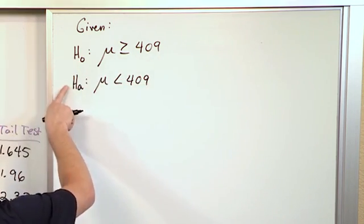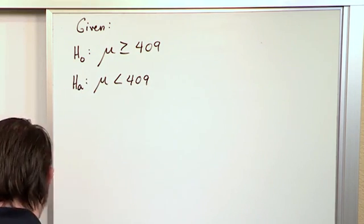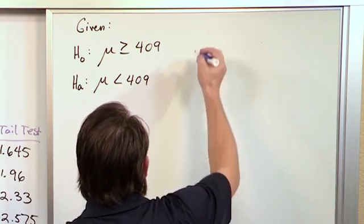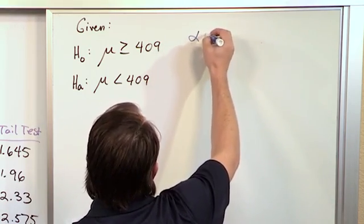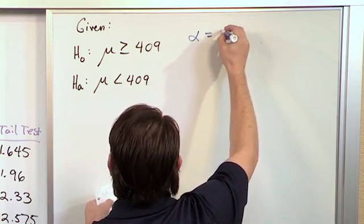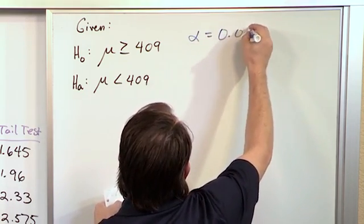All right, so this is the status quo. This is what we're really trying to test. Additionally, in the problem, we are given that alpha, the alpha parameter that we use here, the level of significance is 0.05.